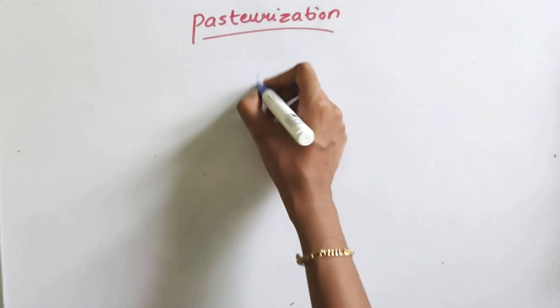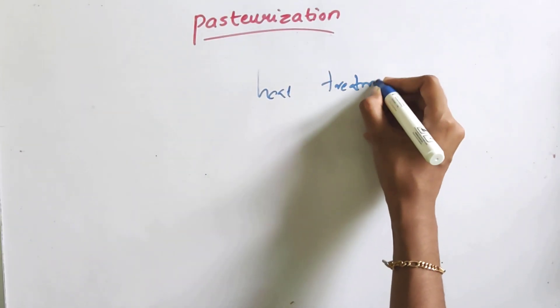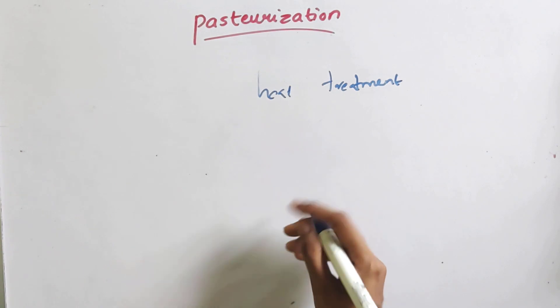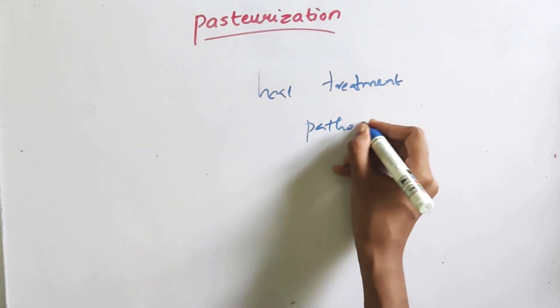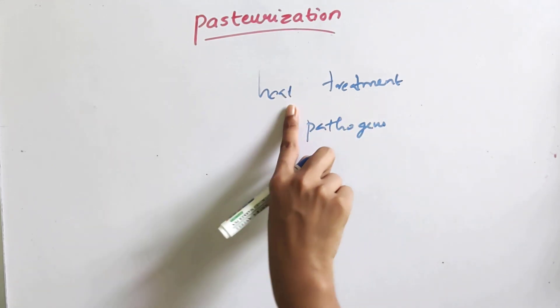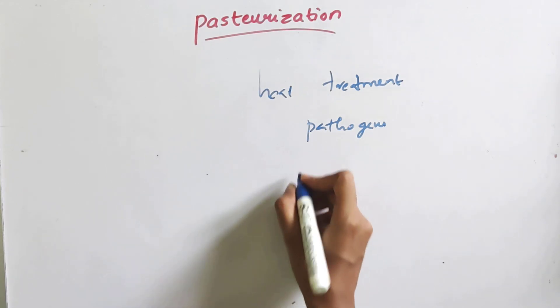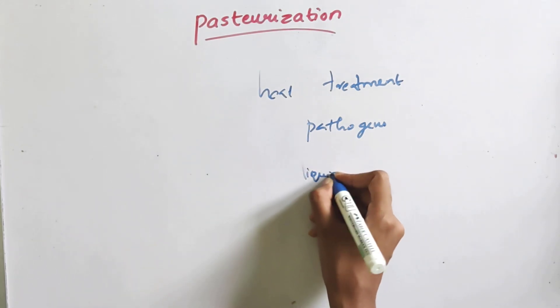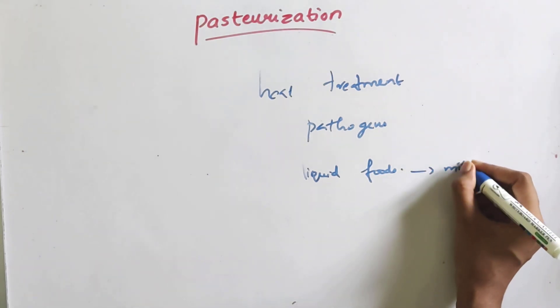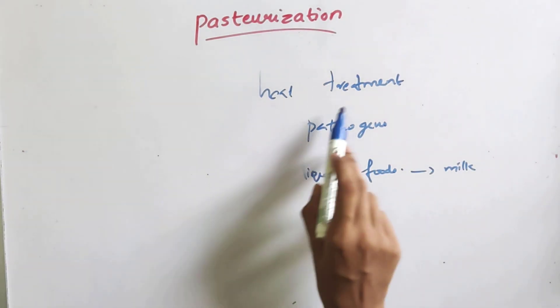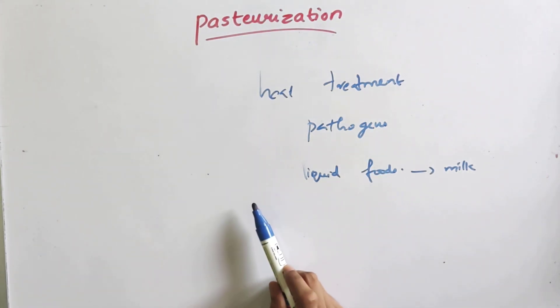Pasteurization is called heat treatment. Pasteurization is used in liquid foods like milk, juice, etc. Pasteurization is a heat treatment which is applied to liquid foods like milk and juice.